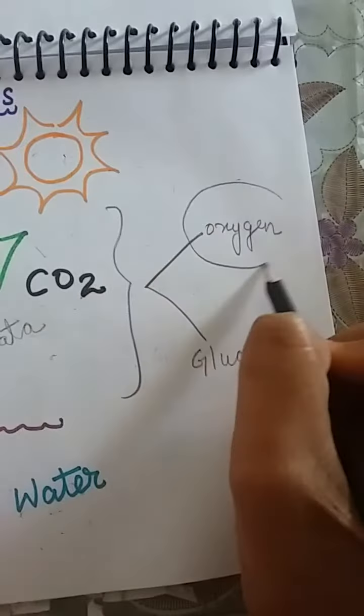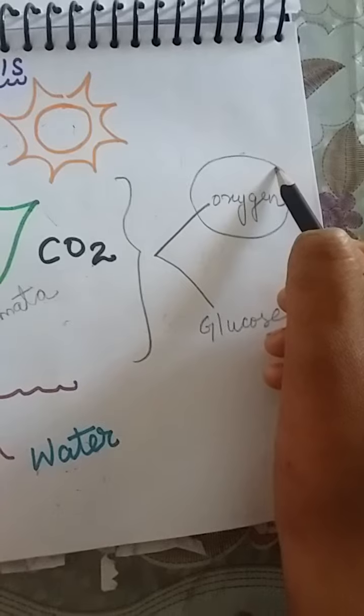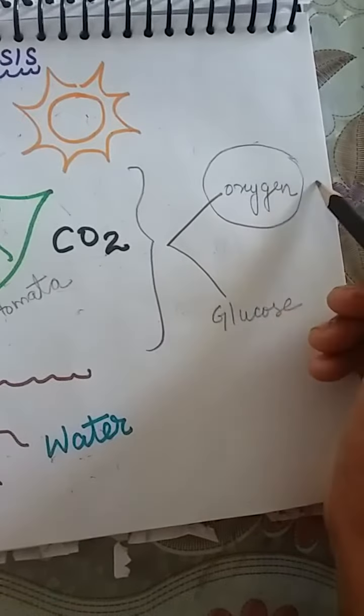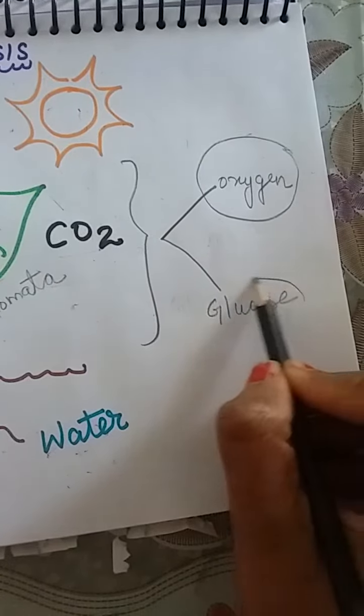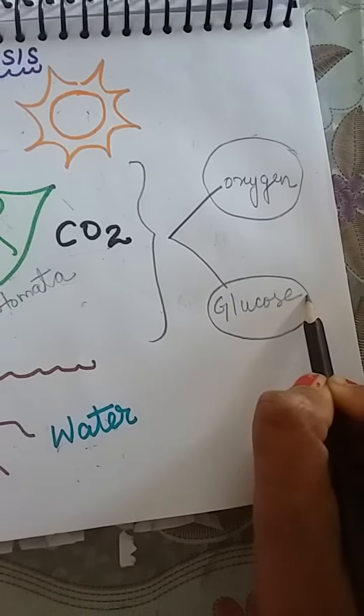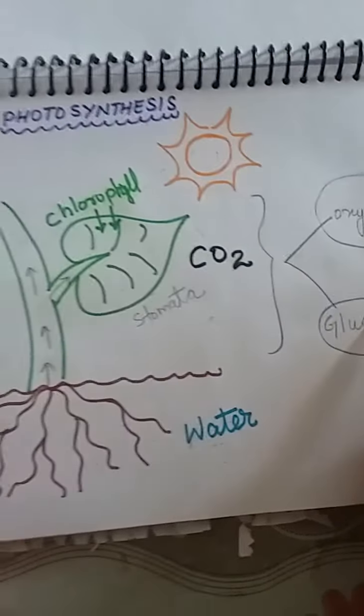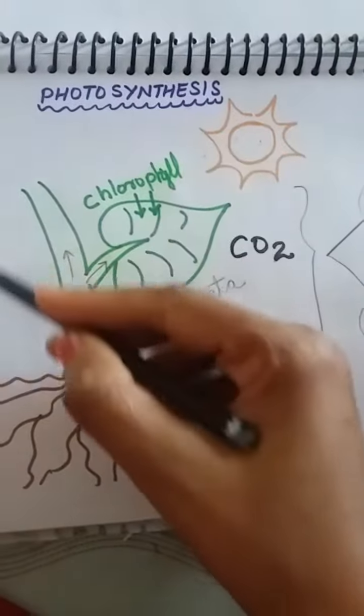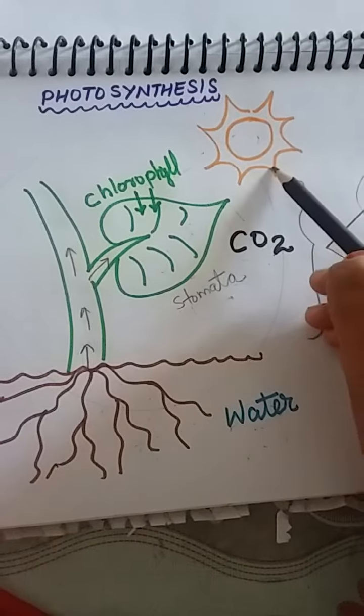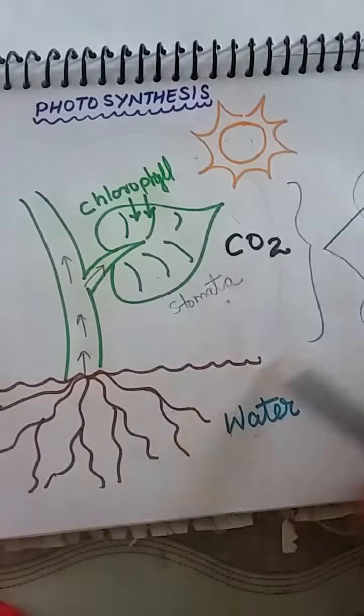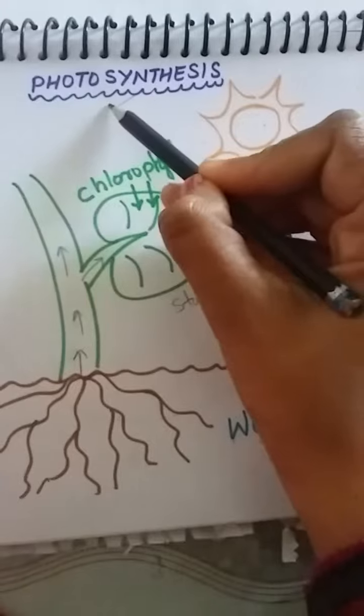This oxygen is released in the air for the use of all living things, and glucose is stored as food in the various parts of a plant. This whole process is known as photosynthesis.